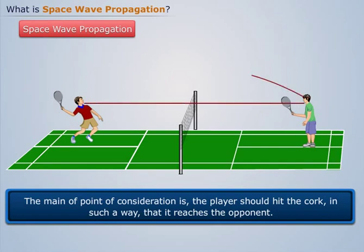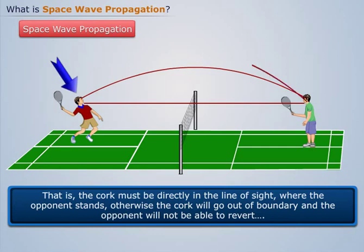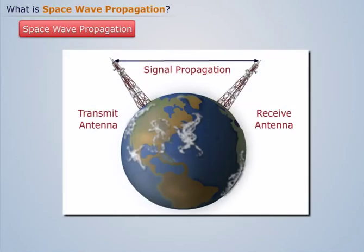That is, the cork must be directly in line of sight where the opponent stands, otherwise the cork will go out of boundary and the opponent will not be able to revert. Similarly, space wave propagation will occur when the transmitting and receiving antennas are in direct line of sight.